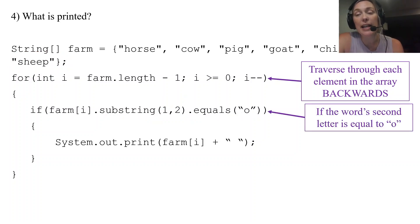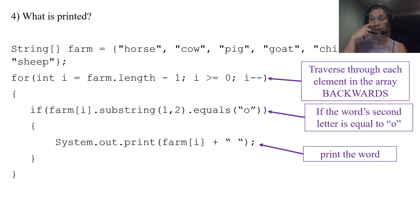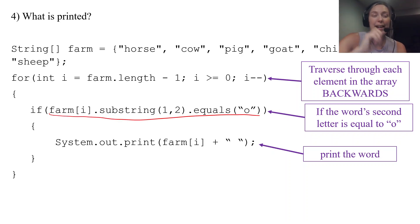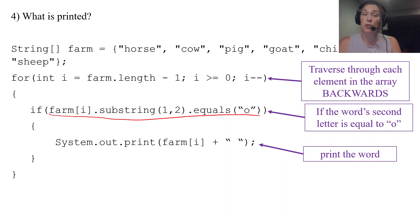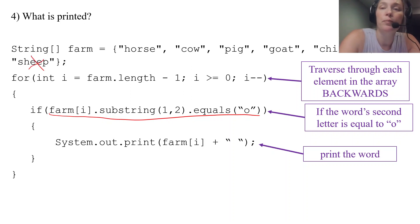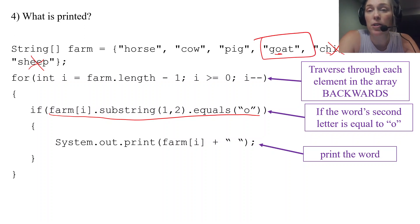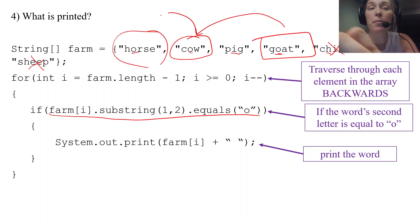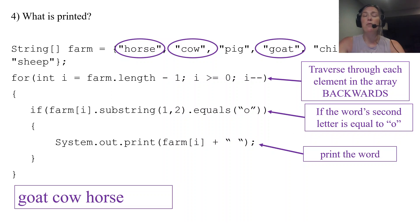Going backwards through the farm: sheep — second letter is 'h', no. Chicken — no. Goat — second letter 'o', yes, print goat. Pig — no. Cow — second letter 'o', yes, print cow. Horse — second letter 'o', yes, print horse. Because we traverse backwards, the output is: goat, cow, horse.